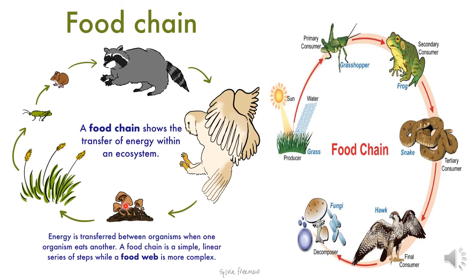If we remove the decomposer, the food chain breaks because decomposers help fertilize the soil and help living organisms grow — they maintain nutrition in the land. Without decomposers, producers cannot get energy or nutrition. So if any one of producer, consumer, or decomposer is removed, the food chain breaks. The producer takes energy from the sun — which is abiotic — and transfers it to consumers one, two, three, four, and then they get decomposed.